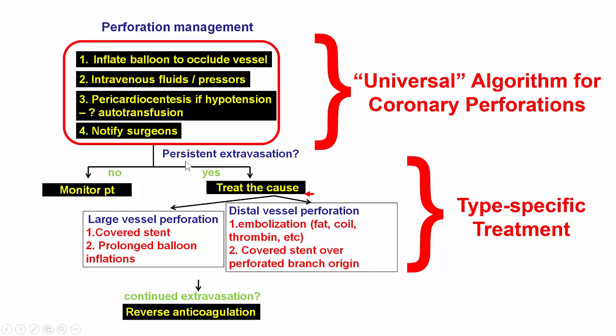Following that, inflating the balloon can sometimes result in cessation of extravasation. But if further treatment is needed, then the cause should be treated. If it's a large vessel perforation, a covered stent is the answer. If it's a distal vessel perforation, then either embolization with fat or coil, or placing a covered stent over the perforated branch origin. We don't want to reverse anticoagulation until after all equipment is removed; otherwise, thrombus can form inside the coronary artery.